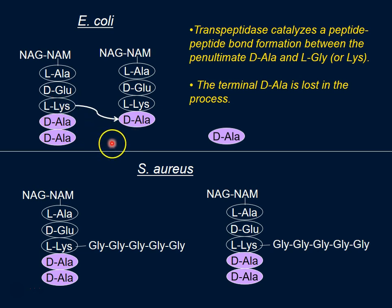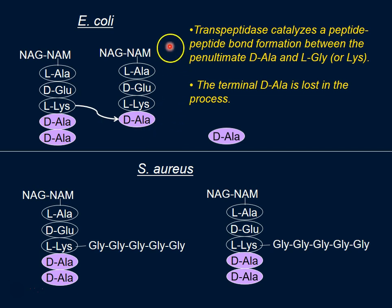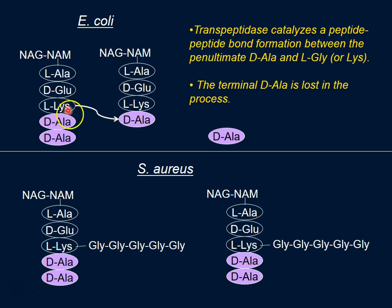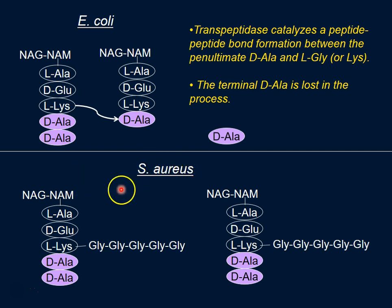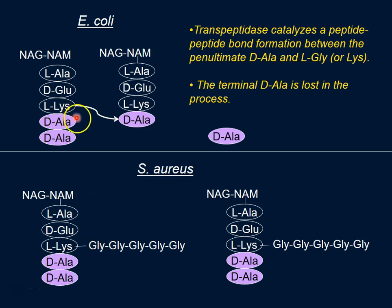So it's important to have both D-alanines — even though the terminal D-alanine leaves, it has to be there for this to occur in the first place. This is the reaction by which cross-linking occurs in E. coli. Staph aureus, which is gram-positive, does this a little bit differently.